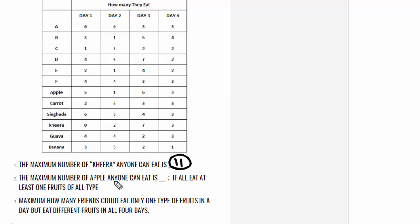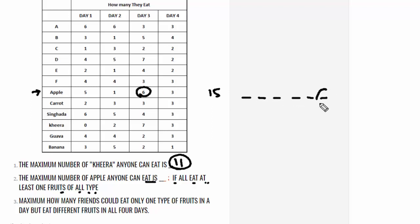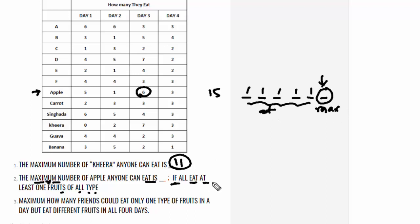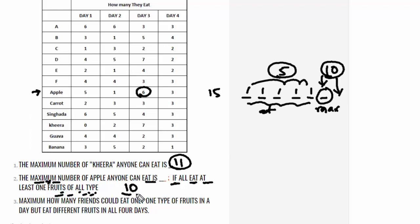Now question number 2: the maximum number of apples anyone can eat is how many, if all eat at least one fruit of all types? The total number of apples is 15 and we have 6 friends. One friend would eat the maximum, and the others would eat at least one apple each. So out of 15, 5 apples go to the rest, leaving 10 apples as the maximum one person could eat.